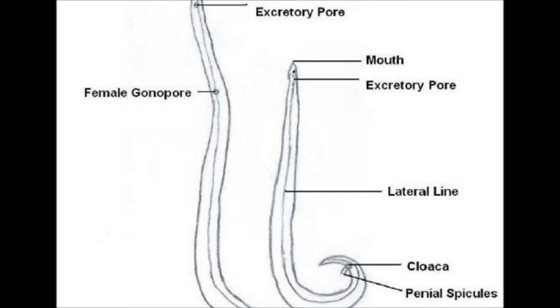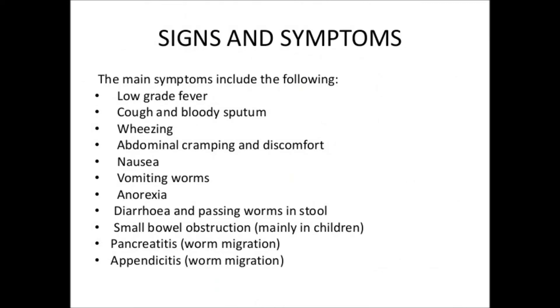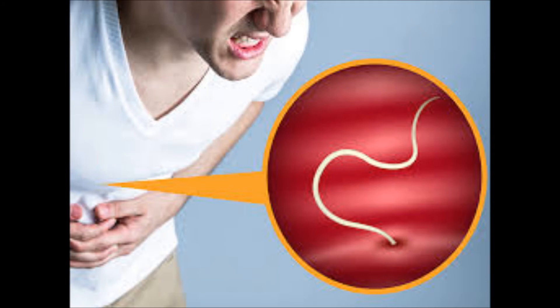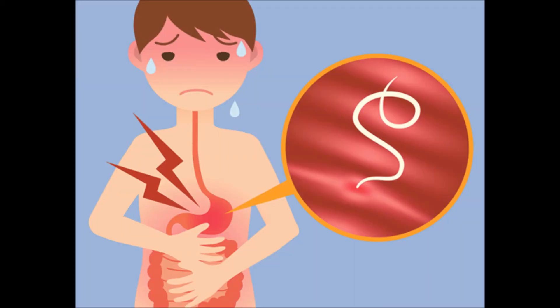Symptoms: Generally, a large number of adult Ascaris worms infest a single host and obstruct the intestinal passage, thereby causing abdominal discomforts like colic pain. The patient may also suffer from impaired digestion, diarrhea, and vomiting.